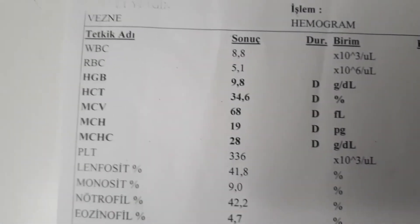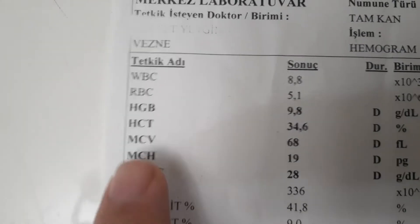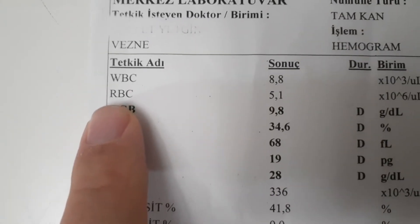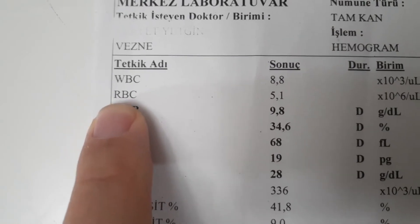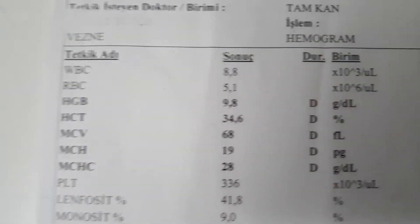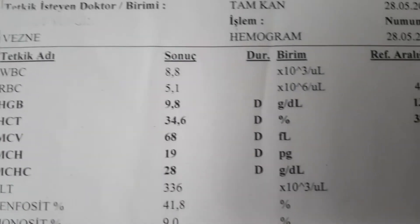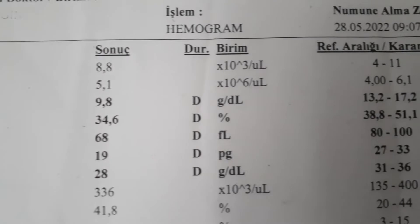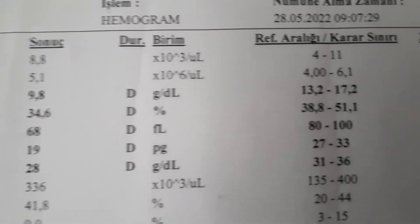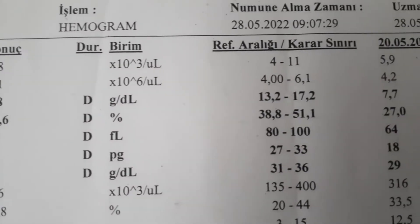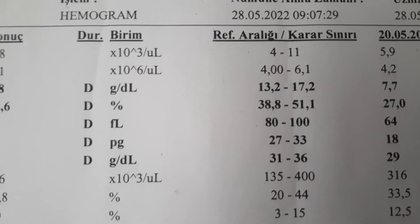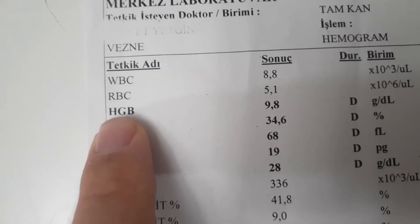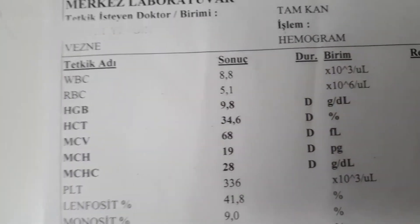The causes of anemia are many: iron deficiency, folic acid, B12 deficiency, bone marrow failure, autoimmune diseases like intravascular hemolysis, chronic diseases such as kidney disease, autoimmune diseases, infections like HIV and tuberculosis, and some cancers like leukemia, multiple myeloma, ulcerative colitis, and Crohn's can lower your RBC level and lead to anemia.